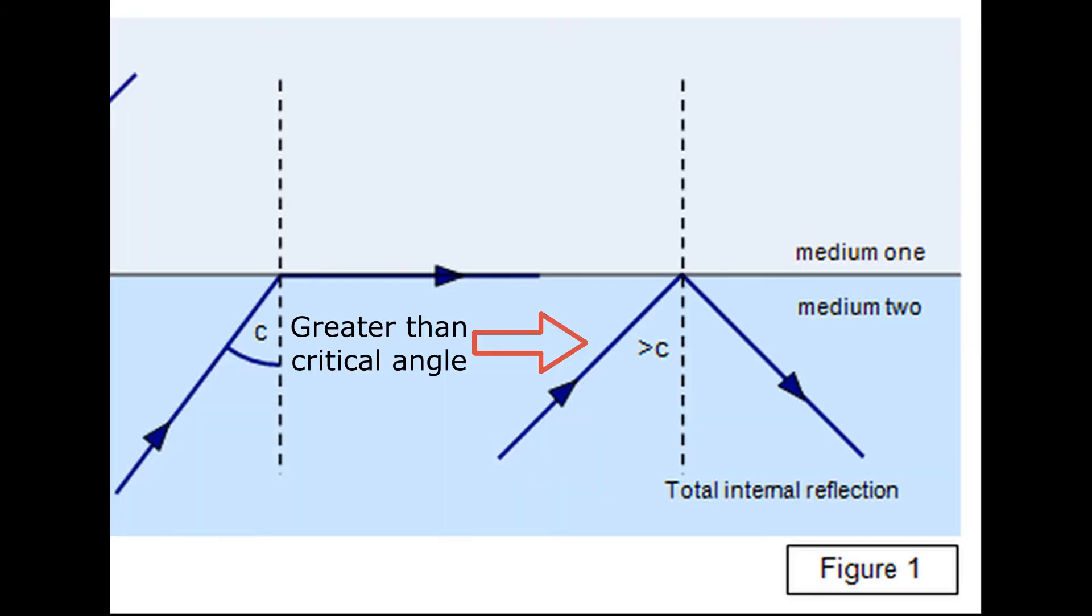And when the incident ray is greater than the critical angle, light gets reflected in the same medium. As you can see in this picture, the light doesn't go outside the medium but gets reflected back in the same surface.